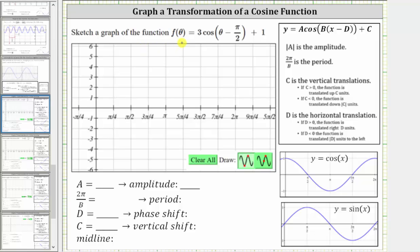We are asked to sketch a graph of the function f(θ) = 3cos(θ - π/2) + 1.